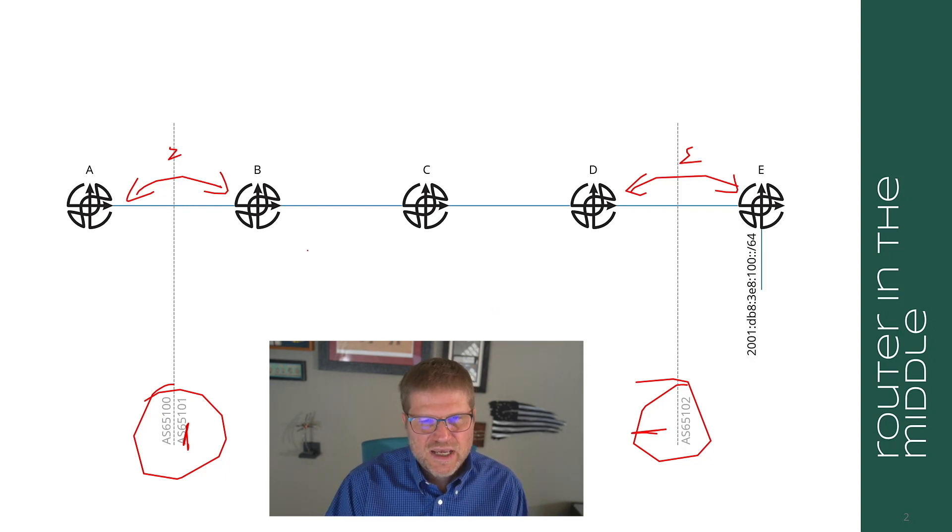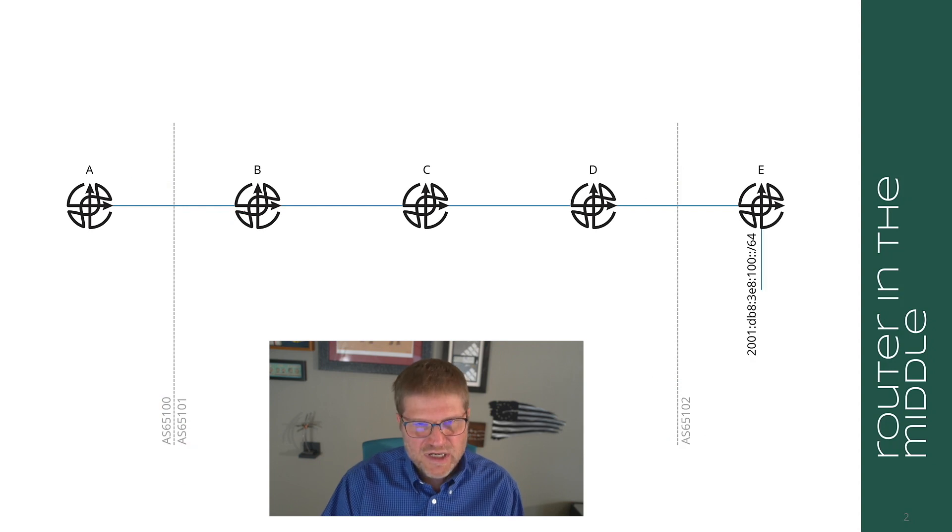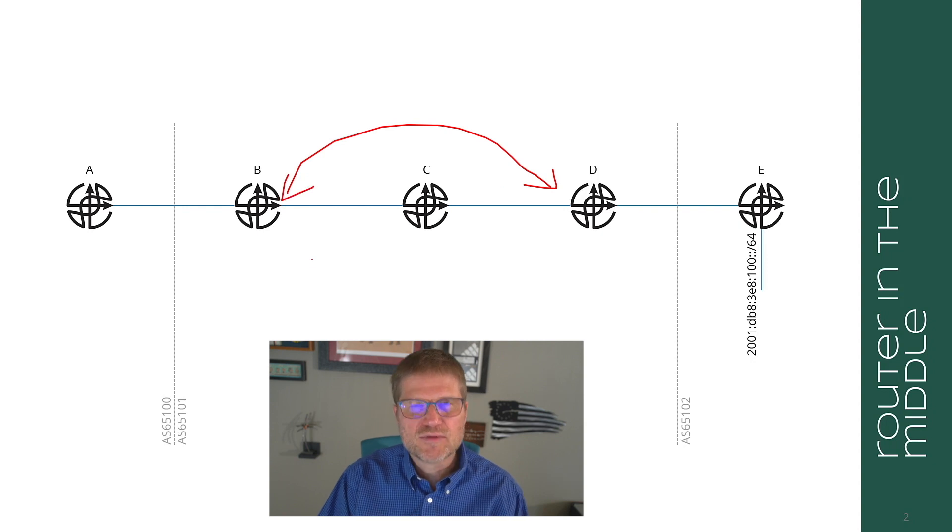Now if we look at this situation, I would have IBGP between B and C and IBGP between C and D, or the other option is what is normally done: IBGP between B and D. Why would that normally be done?